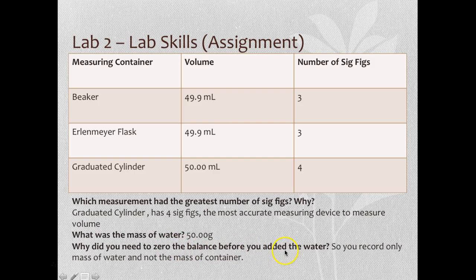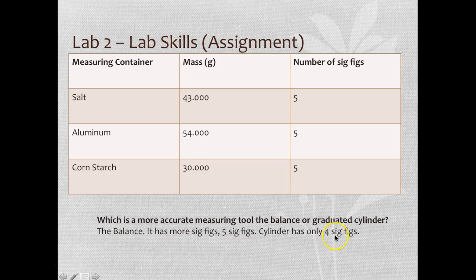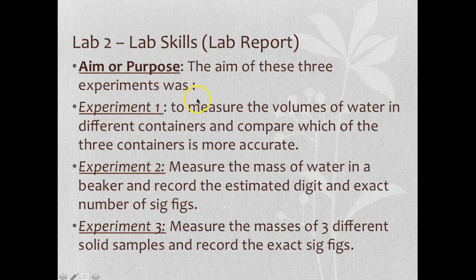The mass of the 50 mL of water was about 50.00 grams — four significant figures. The reason I tared the balance before adding water was to eliminate the mass of the beaker, so I'm measuring only the mass of the water. In Experiment 3, I measured the masses of salt, aluminum, and cornstarch and was able to get five significant figures, meaning the balance has greater precision than the graduated cylinder.